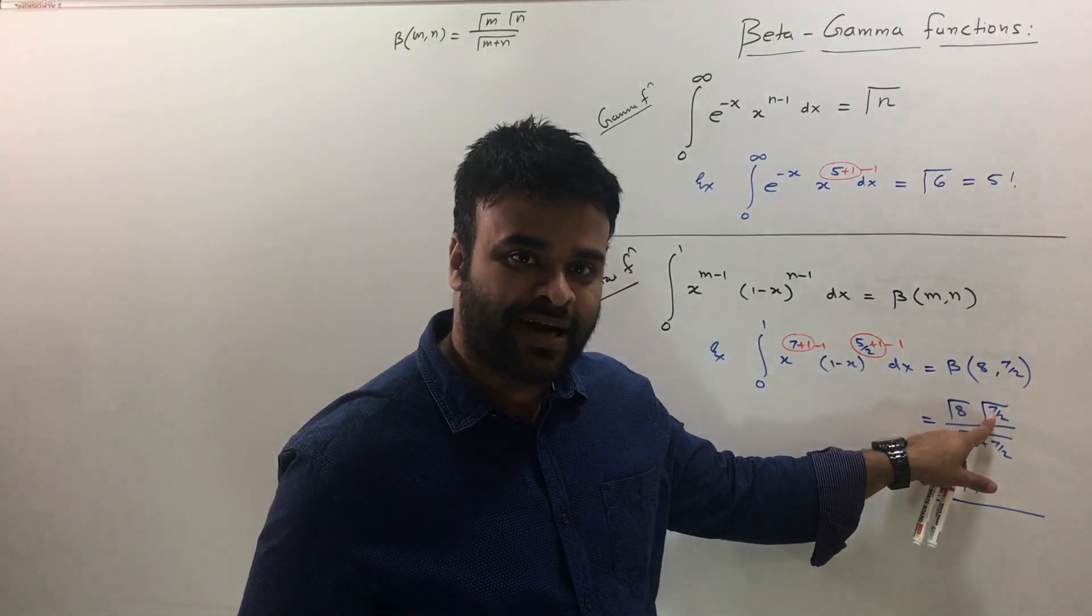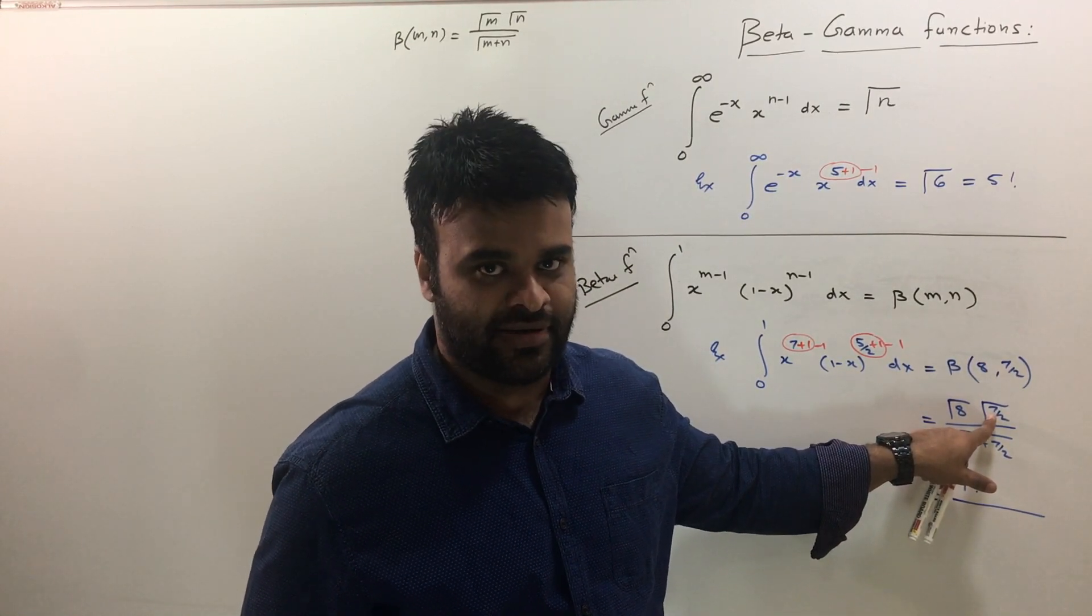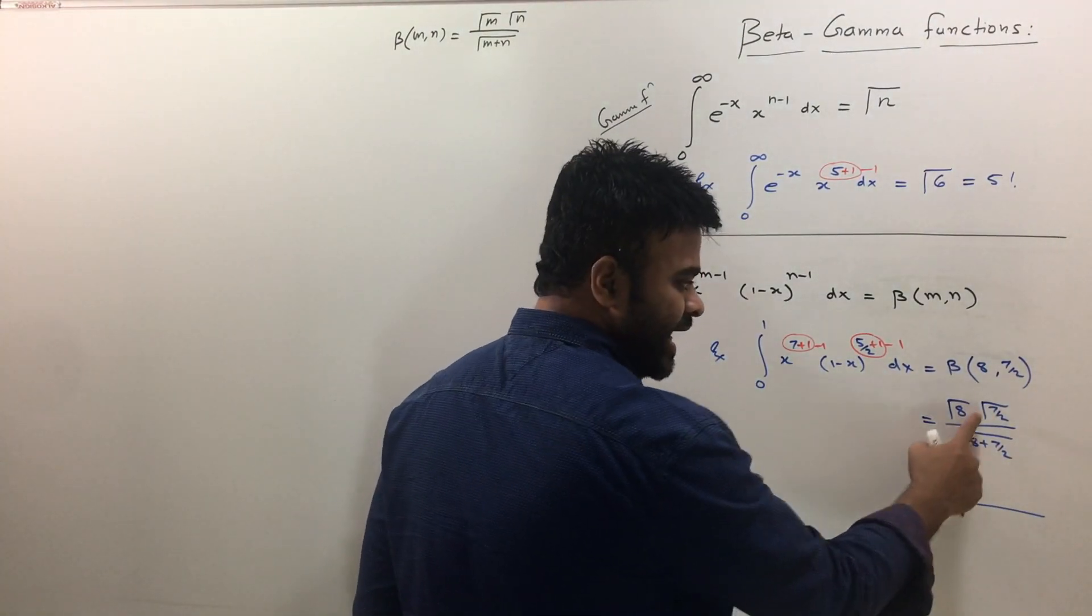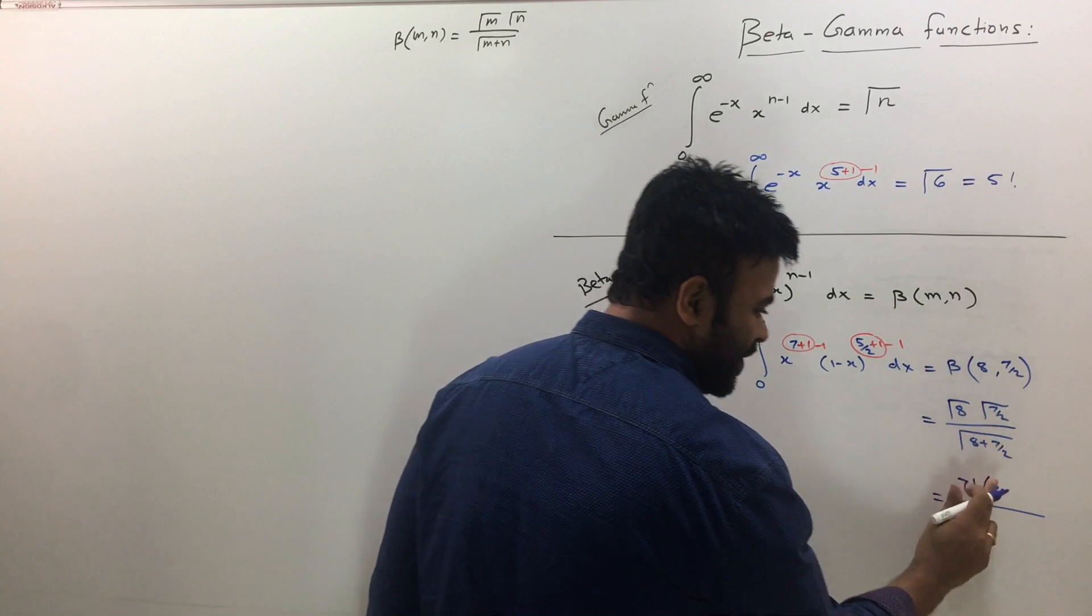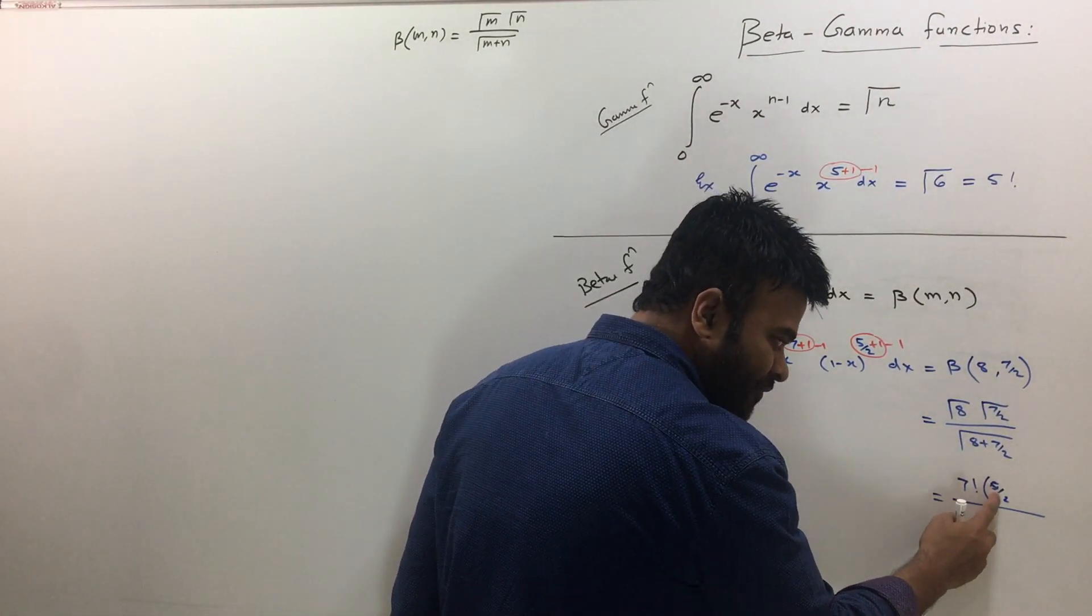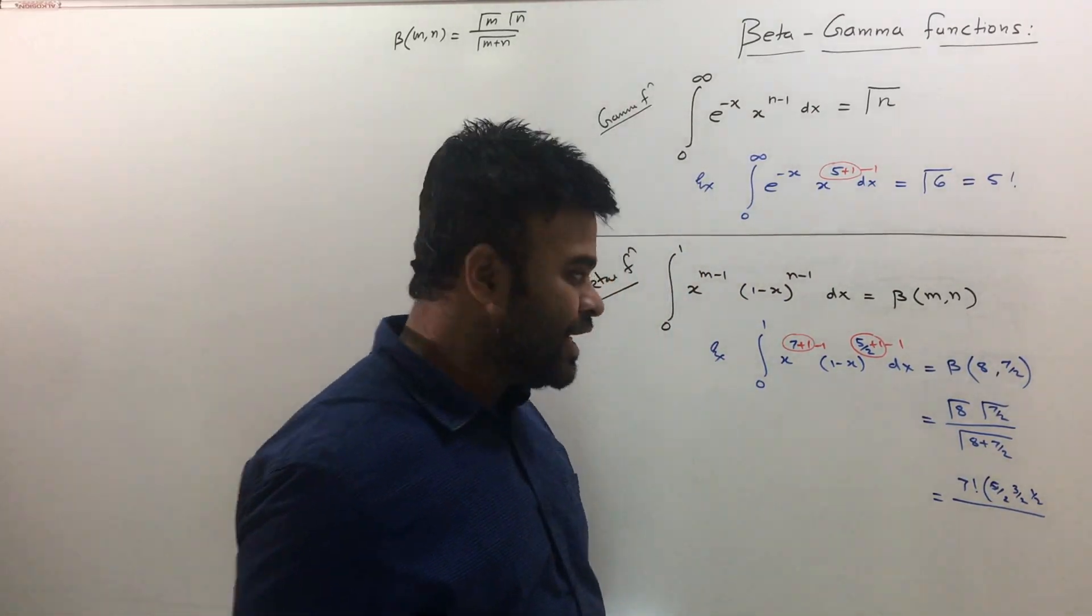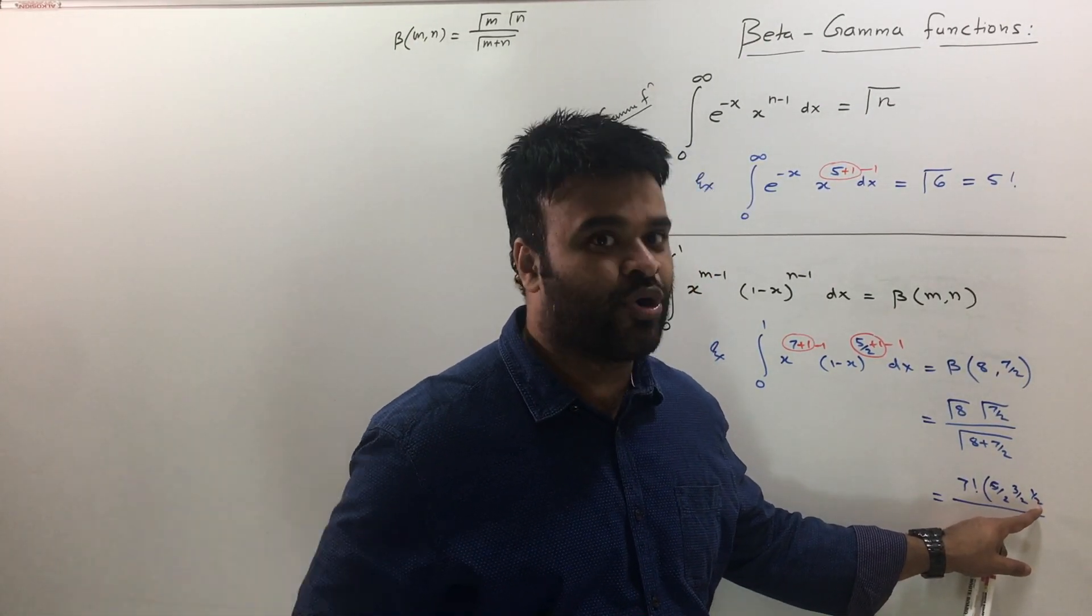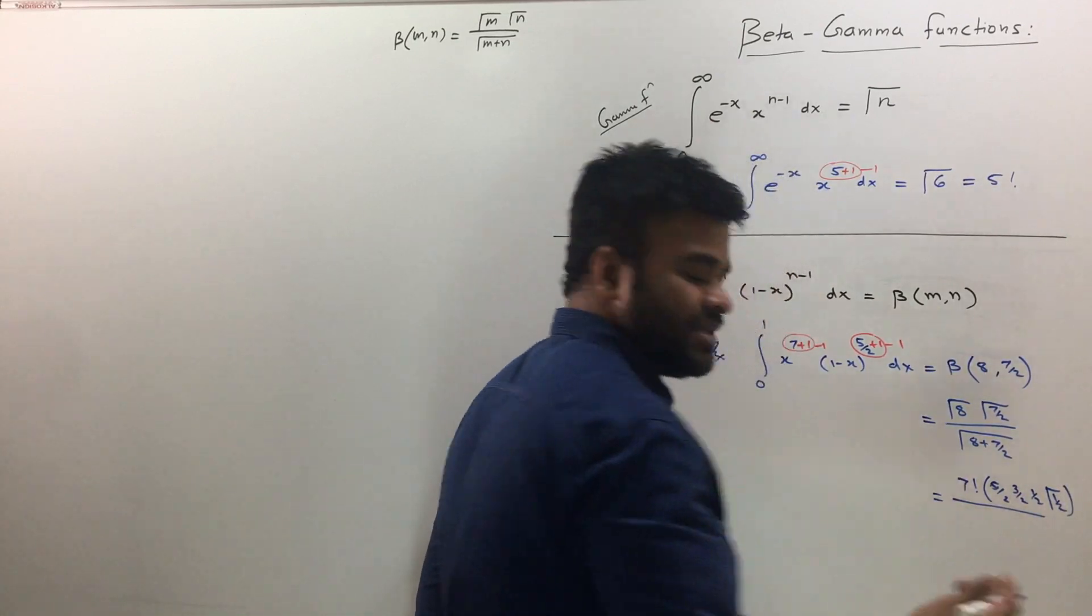But now the problem is when you have gamma 7 by 2, if I do 1 less factorial, you can't write factorial for fractions, that's just invalid. The factorial is applicable only if it is a whole number. So now when you have fractions inside gamma, the way of writing this would be, there's a technique to this: when you have 7 by 2, just subtract 1 from 7 by 2 which will become 5 by 2. Now write that down, 5 by 2, and subtract 1 from 5 by 2 as well. So you will get this as 3 by 2, subtract 1 one more time, so it becomes half. And you keep subtracting 1 till you get the last positive number. See now if I subtract 1 from half, it's going to be negative. So you have to stop at this point, and whatever is your last number, just repeat that and write it as gamma half.